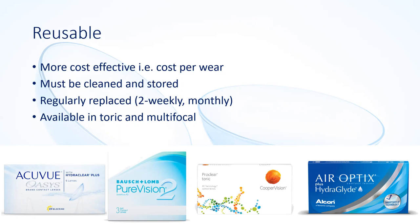Like day disposables, reusables are available to correct astigmatism with toric lenses and also in multifocal and varifocal designs. Reusables have been around longer than dailies, so they have a slightly wider range of parameters. Particularly with astigmatism, we can correct much higher amounts of astigmatism with a reusable lens than with a daily lens.